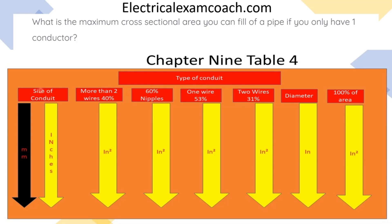On the left-hand side of this table is our size conduit. If we have more than two wires, if we have a nipple at 60% or any other 60% value, and then if you're only doing one wire, and where this would be practical is like if you're doing a grounding electrode conductor or something like that, but you're only allowed to fill that pipe 53%.